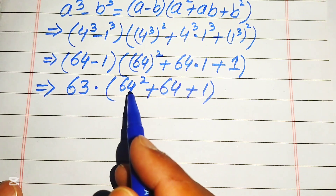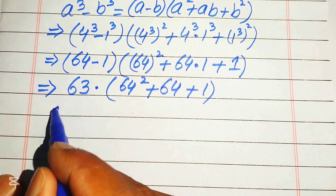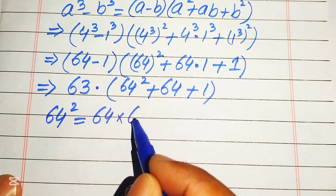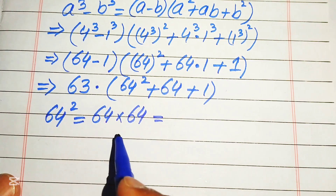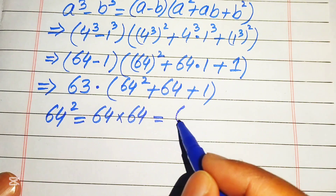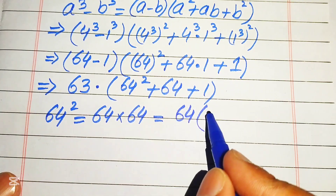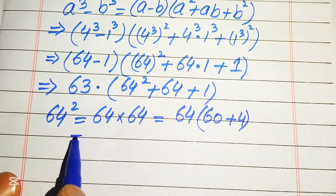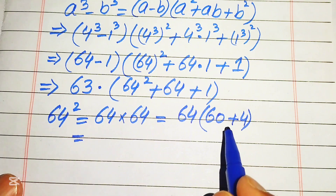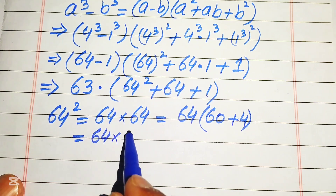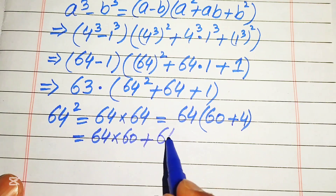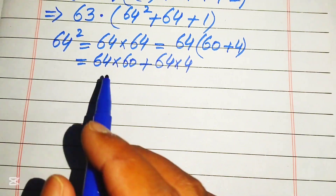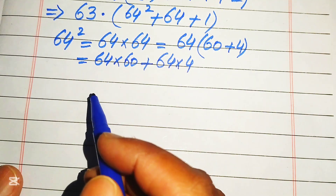First we find the square of 64, meaning we multiply 64 by 64. We break 64 as 60 plus 4 and multiply: 64 times 60 plus 64 times 4. Now we multiply 64 by 60 without using the calculator.